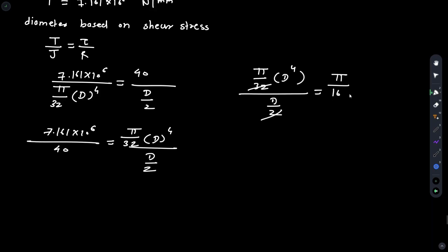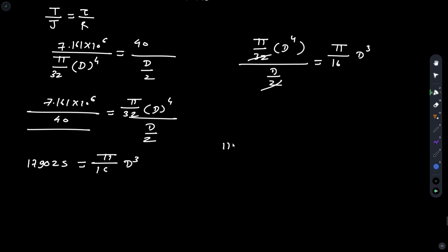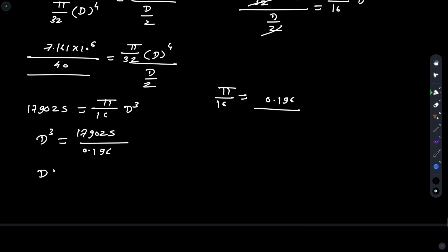This D and this D will become D raised to 3. Putting this in the equation and solving, we get 179025 equals pi by 16 D raised to 3. Pi by 16 equals 0.196. So D cubed equals 179025 divided by 0.196.